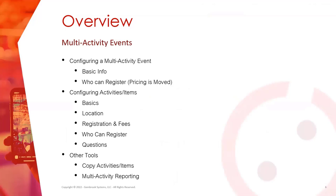Today we're going to cover how to do the basic configuration and start a multi-activity event, how to set up registration, how to set up multiple tiers of pricing, and we'll walk through the configuration of a few activities and items. We'll go over how to set up different locations if your activities are taking place in separate locations, and we'll cover the changes that occur with registration, fees, and who can register — because those are very different from single activity events. We'll also review how to ask questions per activity, and go over tools like multi-activity reporting and copying activities to save time.